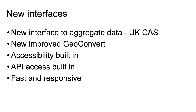We are currently working on two new interfaces. One, which we're calling UK CAS, will unfortunately replace CASWeb — which has been going since 1998 — and also do away with Infuse. It will provide an interface to data from 1971 through to 2021. We're also working on a new and improved Geoconvert. Both interfaces will have accessibility and API access built in, and we're hoping to link from UK CAS straight through to Geoconvert so you can take data at census levels, convert it to other geographies, and add further metadata. Both interfaces will be extremely fast and responsive.